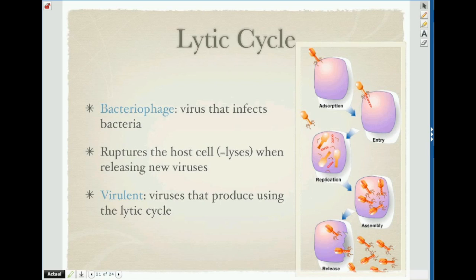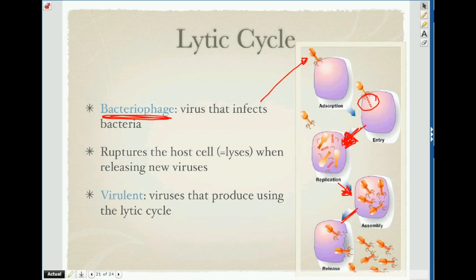Now we have these two cycles: the lytic cycle and the lysogenic cycle for bacteria — basically it's how they reproduce. A bacteriophage is something that infects bacteria. It's going to send its DNA into the cell, and then the cell starts replicating that DNA and making lots of little baby bacteriophages. It keeps making them, and then when the cell is basically full of little viruses, the cell will lyse. That's where they get the name lytic cycle — it basically explodes and releases all these little virus cells, and then each one goes and infects a different cell.